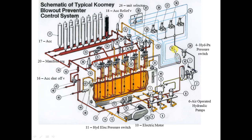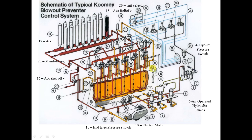Number forty is the oil level indicator for the reservoir. Number forty-one is the hydraulic fluid fill hole — where you can add hydraulic oil to the reservoir. The fluid used is mostly hydraulic oil, though sometimes water with lubricant is used.